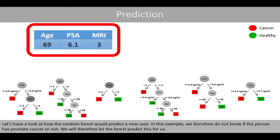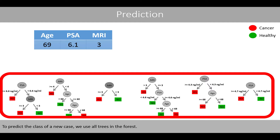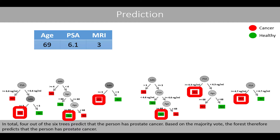Let's look at how the random forest would predict a new case where we do not know if the person has prostate cancer. The person has an age of 69, a PSA level of 6.1, and an MRI score of 3. To predict the class, we use all trees in the forest. The first tree predicts prostate cancer, the second predicts healthy, and so forth. In total, 4 out of 6 trees predict prostate cancer, so based on the majority vote, the forest predicts that the person has prostate cancer.